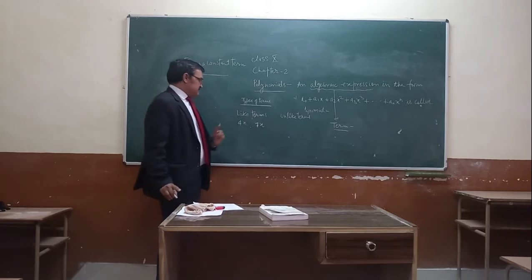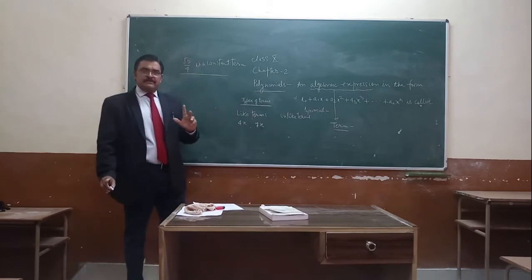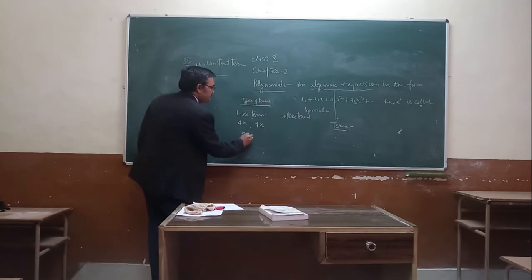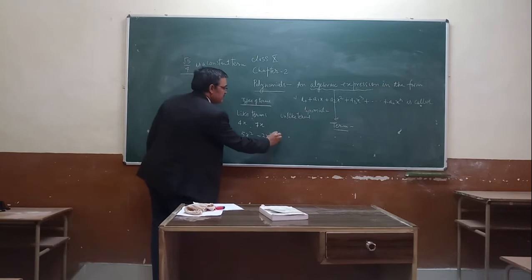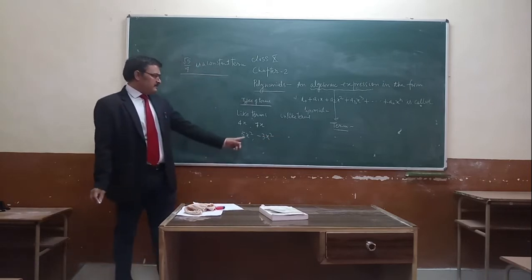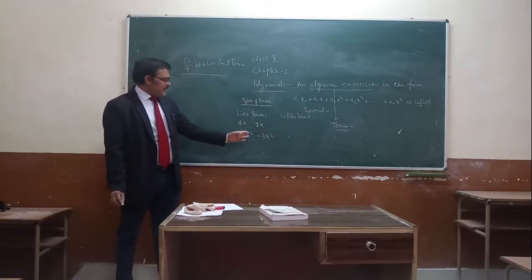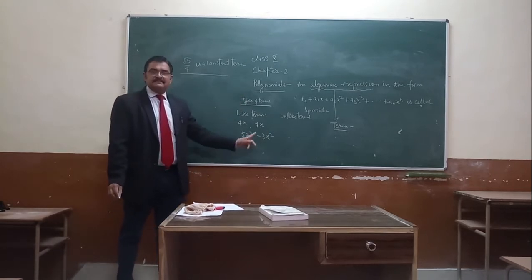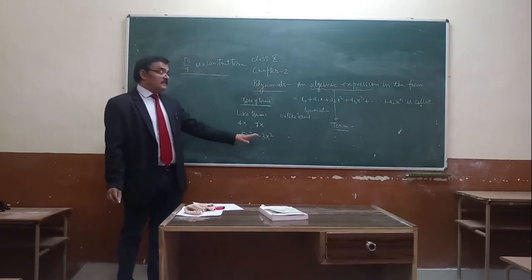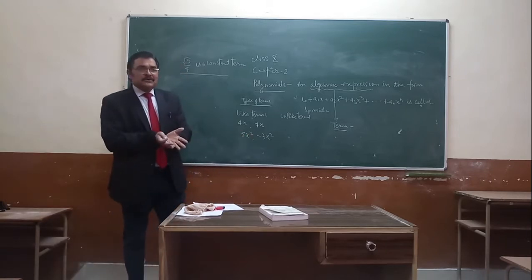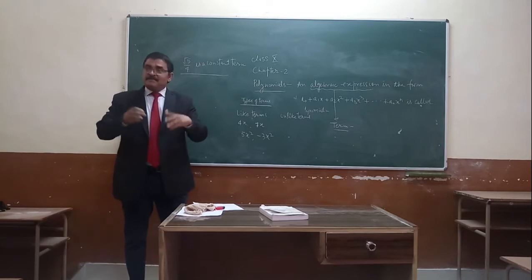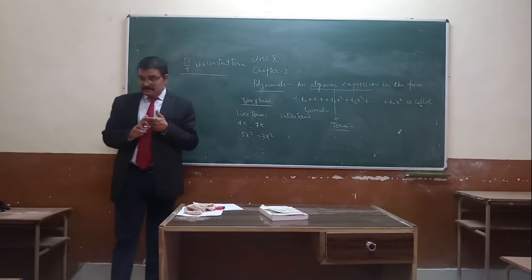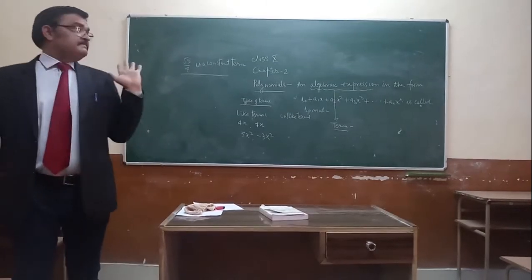In like terms, variables will be same and powers will also be same. For example, 5x² minus 3x² — variable is same, powers are same, but real values are different. So these are like terms. In like terms, coefficients may be different, but their variables must be same and their powers must also be same.